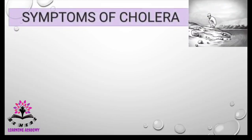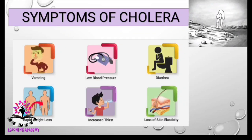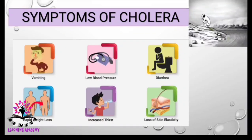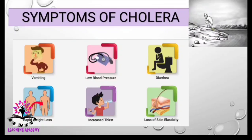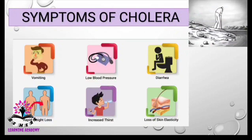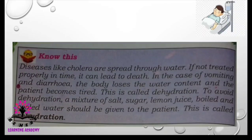What are the symptoms of cholera? They include vomiting, low blood pressure, diarrhea, rapid weight loss, increased thirst, and loss of skin elasticity. Diseases like cholera spread through water, and if not treated properly in time, it can lead to death. In the case of vomiting and diarrhea, the body loses water and the patient becomes tired — this is called dehydration.